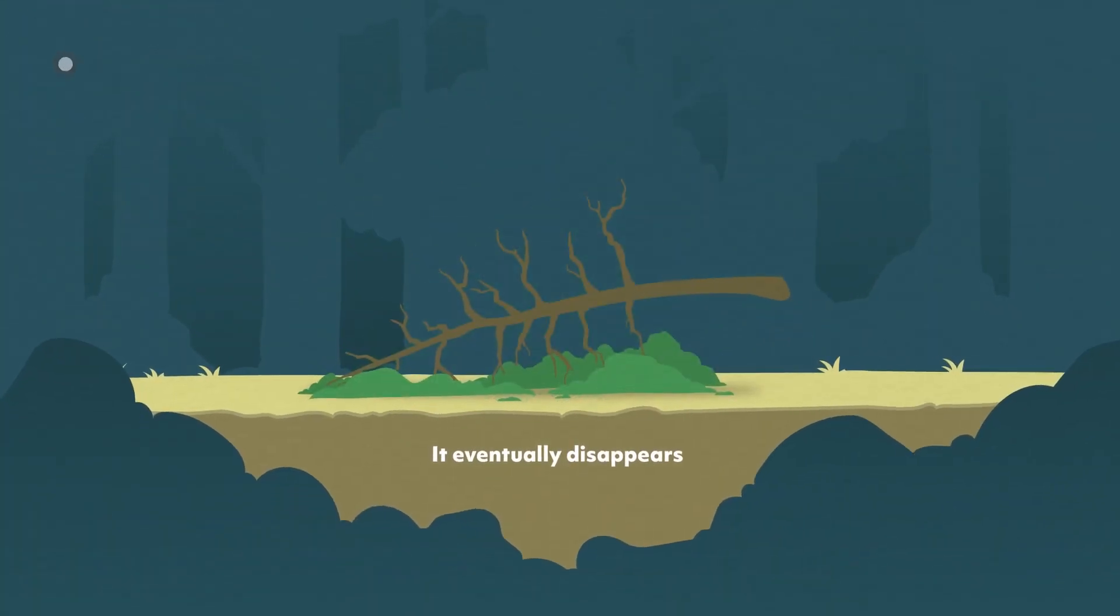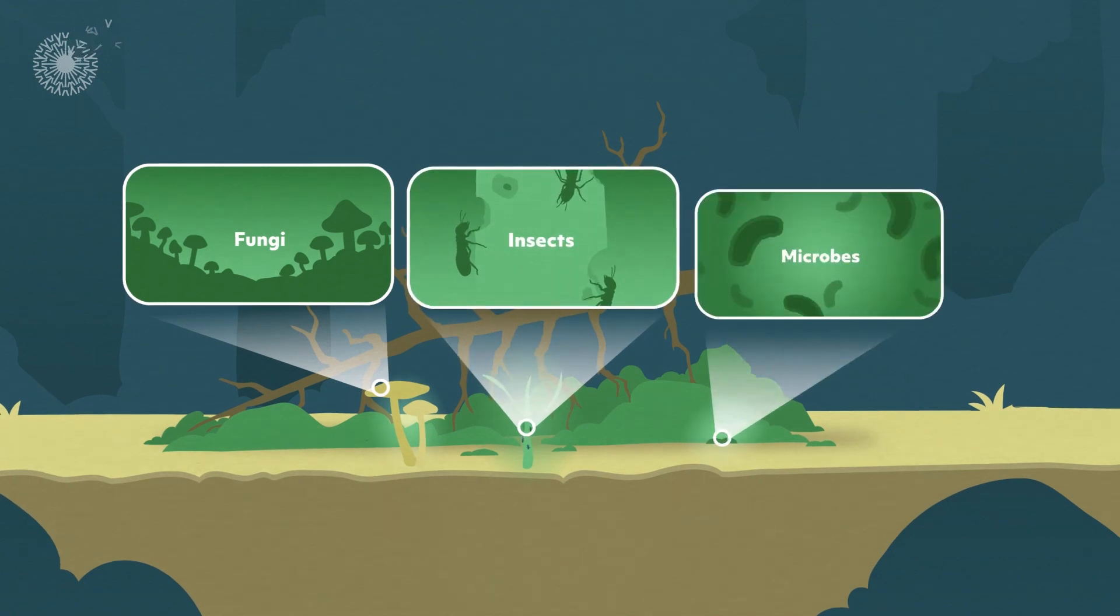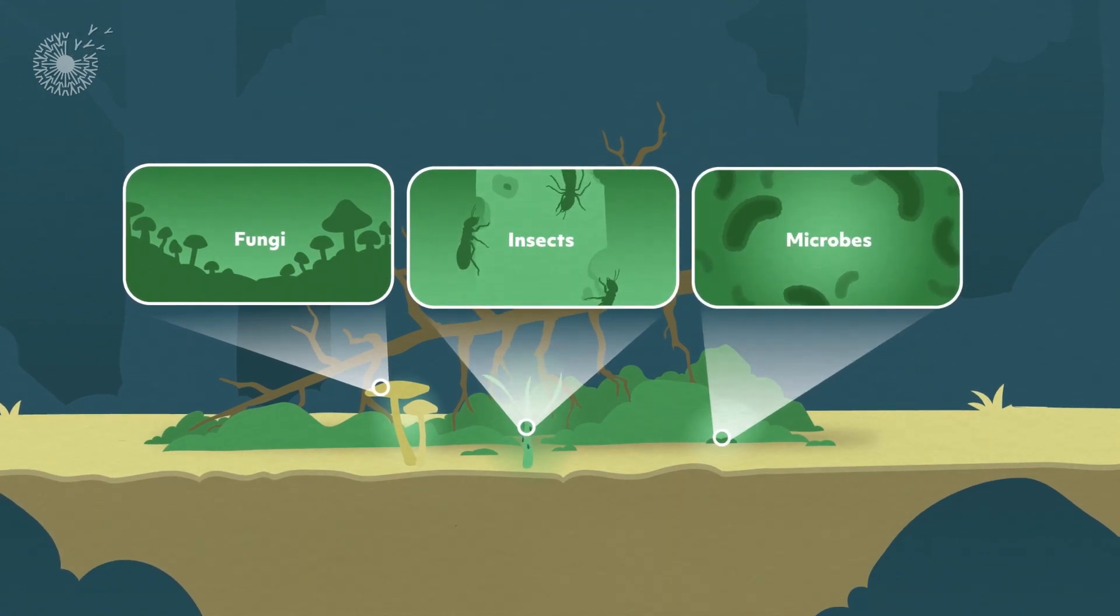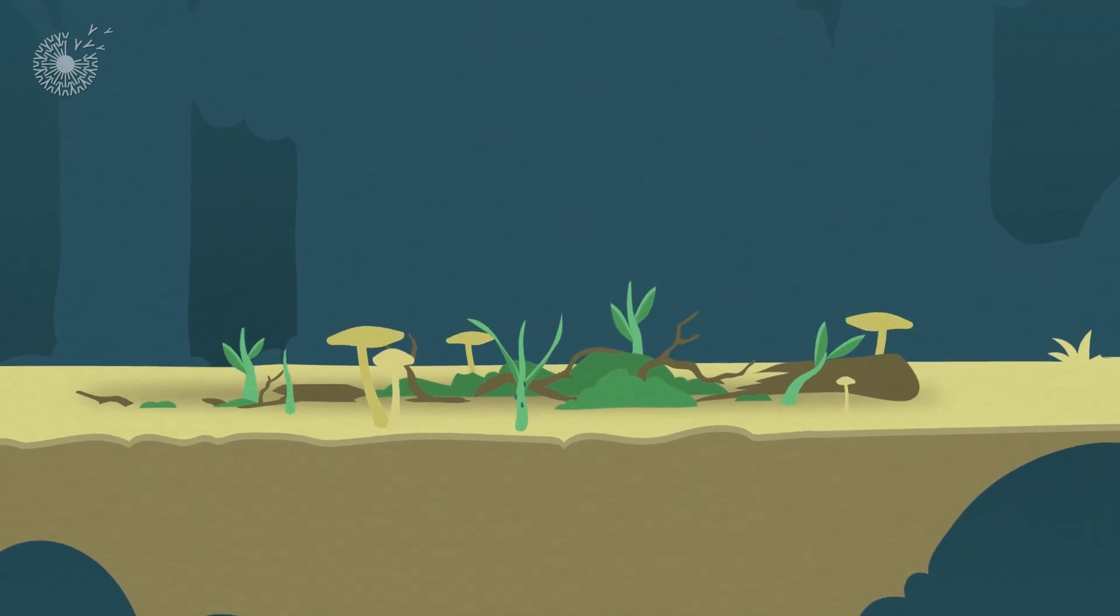If a tree falls in a forest, it eventually disappears. Fungi, insects, and microbes decompose it into soil, in which a new generation of plants can grow.